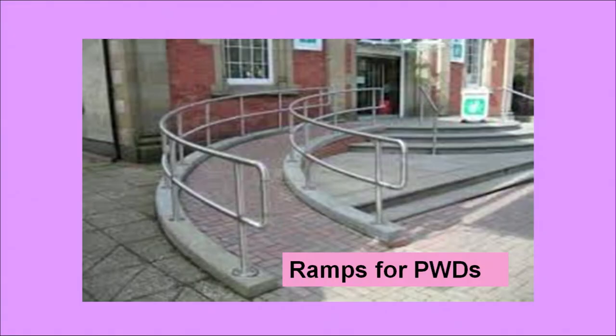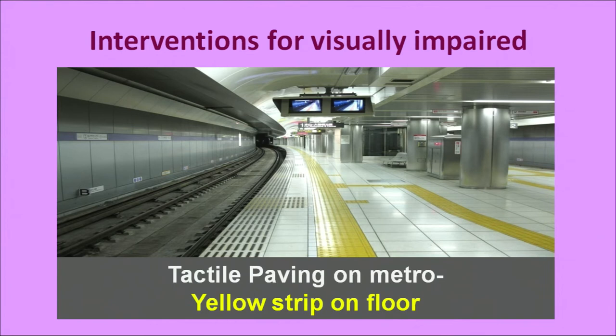These persons are also referred to as PWDs — Persons with Disabilities. In this picture, you can see ramps are provided for them so they can walk or take their wheelchair easily without climbing the stairs. Recently in some railway stations, tactile paving has been provided — the yellow strip you see is slightly raised or bulged so that visually impaired persons can touch it with their stick and walk along with that.